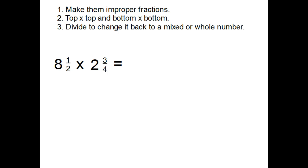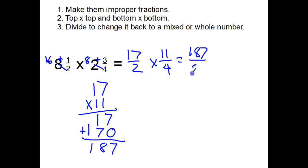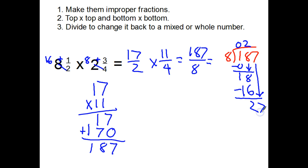Last one: eight and a half times two and three-quarters. Eight times two is sixteen, plus one is seventeen — seventeen halves. Four times two is eight, plus three is eleven — eleven fourths. Seventeen times eleven is one hundred and eighty-seven, and two times four is eight on the denominator. One eighty-seven divided by eight: two eights in eighteen is two, two times eight is sixteen, remainder two, bring down seven. How many eights in twenty-seven? Three. Three times eight is twenty-four, remainder three. My answer is twenty-three and three-eighths.